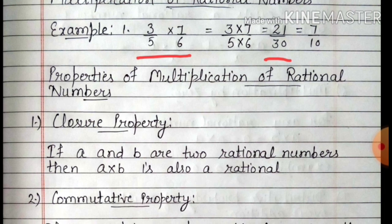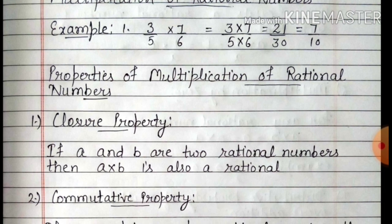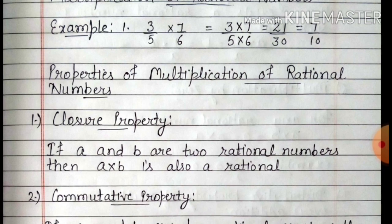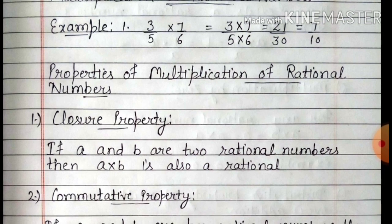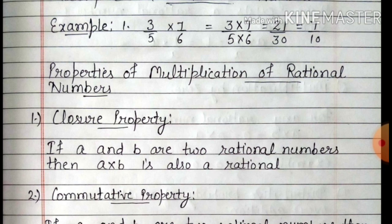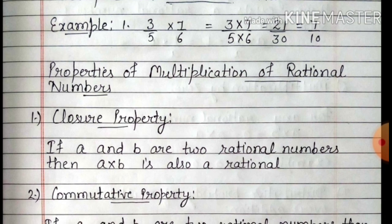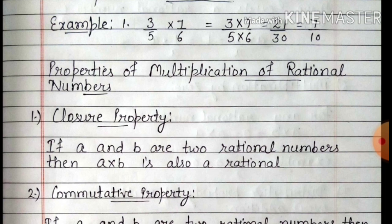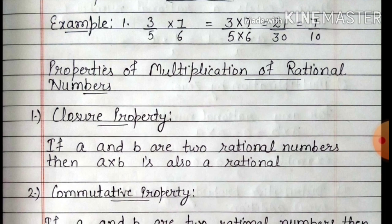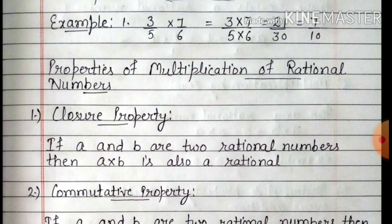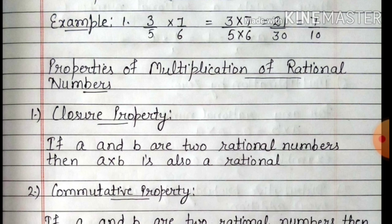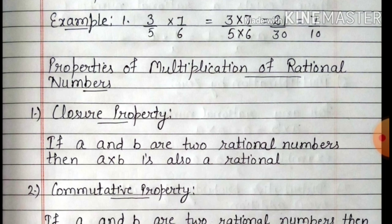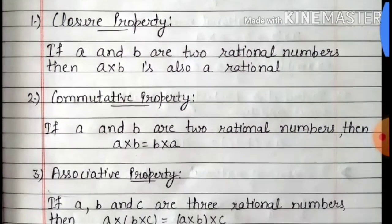अब हम discuss करेंगे properties of multiplication of rational numbers. First is closure property. If A and B are two rational numbers, then A multiply B is also a rational number. अगर हम A यानि कि 1 by 2 rational number लें, B लें 3 by 4 — अगर हम इन दोनों rational numbers को multiply करते हैं, तब भी एक rational number ही बनेगा. तो ये है closure property.